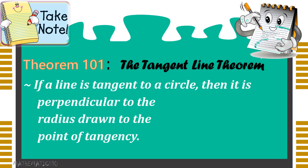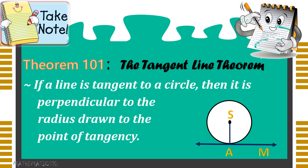Theorem 101 states that if a line is tangent to a circle, then it is perpendicular to the radius drawn to the point of tangency. In our example illustration, we have circle S and tangent line EM. Line EM intersects circle S at exactly one point, so based on theorem 101, this tangent line is perpendicular to the radius drawn to the point of tangency. Therefore, the angle formed is equivalent to 90 degrees. Angle SAM is 90 degrees, and the other side is 90 degrees as well since they are perpendicular — they are linear pairs.